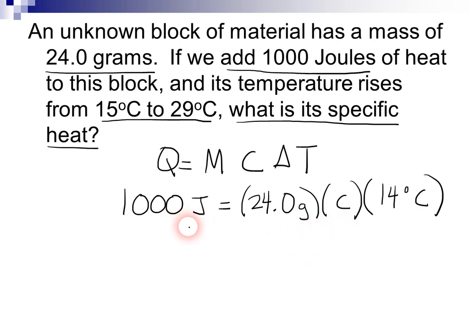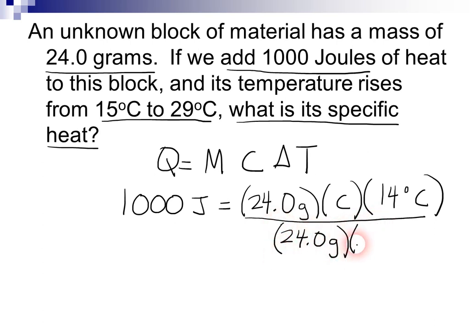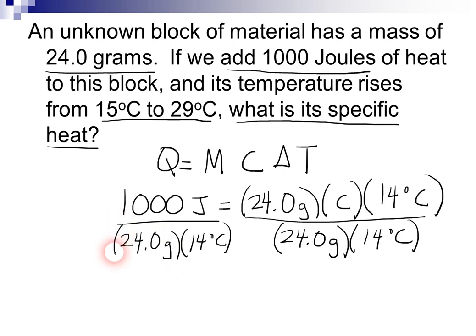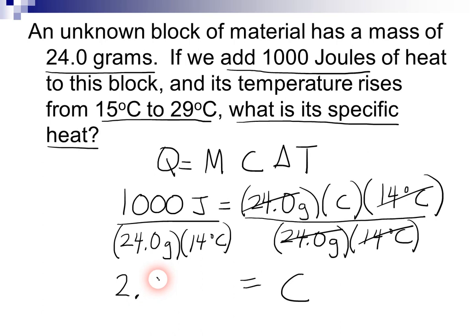We just have to solve for C. What we can do is divide both sides by 24 grams and 14 degrees Celsius, and do the same thing on the left side. When we do that, those cancel. When we punch that into our calculator, we find that the answer is about 2.98. Our units are joules per gram degree Celsius. So that's our answer for the second problem — that's our answer for C.